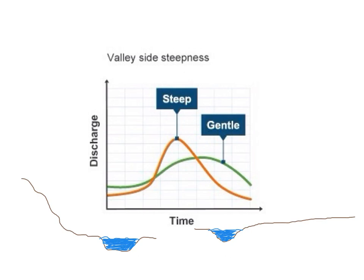Valley side steepness also influences the shape of the hydrograph. When you have a steep valley side and it rains, the water when it reaches the ground will fall very quickly overland and into the river. And this explains why there is a very fast rising hydrograph and then a falling limb.